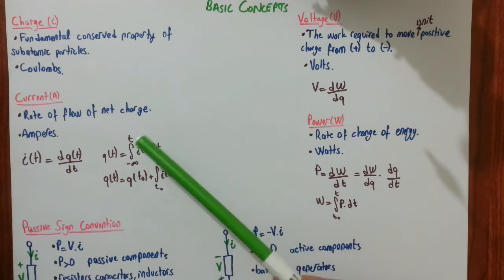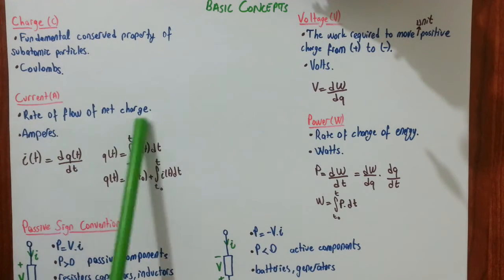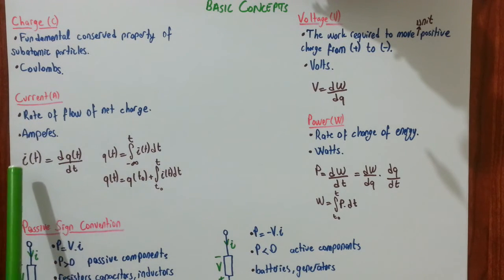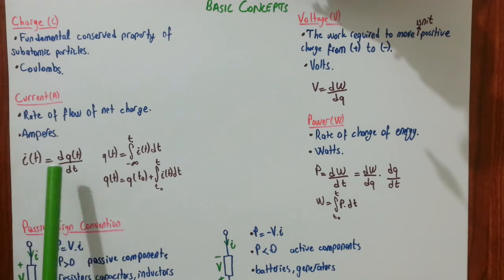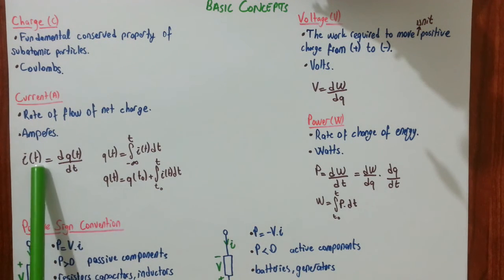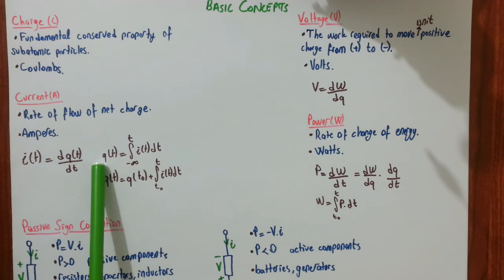Current. Current is the time rate of flow of the net charge and SI unit is amperes. So, if you want to express this verbal definition in mathematics, it's written in here, current is the time derivative of the charge. If you take this derivative I and take the integral from minus infinity to a time t, what we get is the net charge.